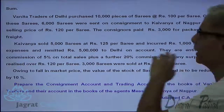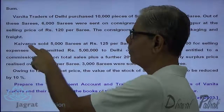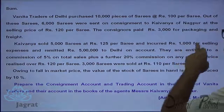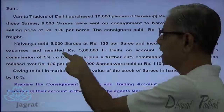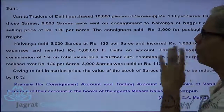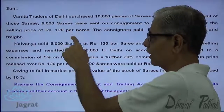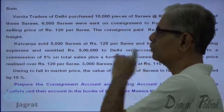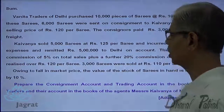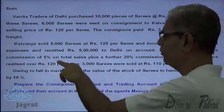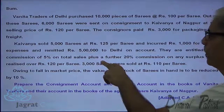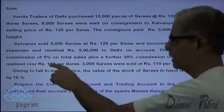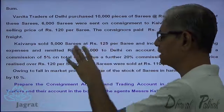Consignor paid ₹3,000 for packing and freight. Kaivanya sold 5,000 sarees at ₹125 per saree, incurring ₹1,000 for selling expenses, and remitted payment to Delhi on account. So 6,000 sarees are sent to the consignee; Kaivanya sold 5,000 sarees, so 1,000 is the consignment stock. They are entitled to a commission of 5% on total sales plus 20% commission on surplus price realized over ₹120 per saree. This is the commission calculation.